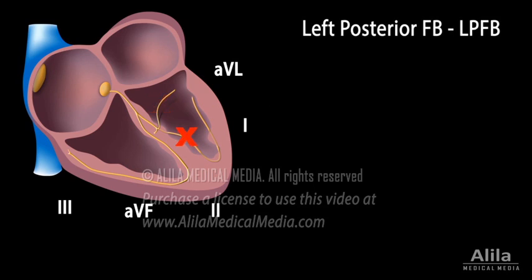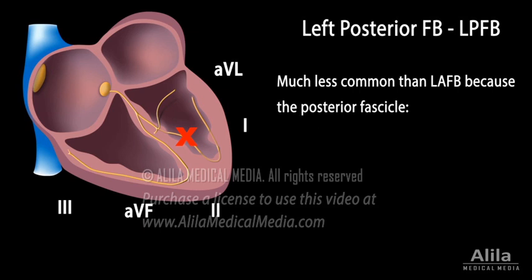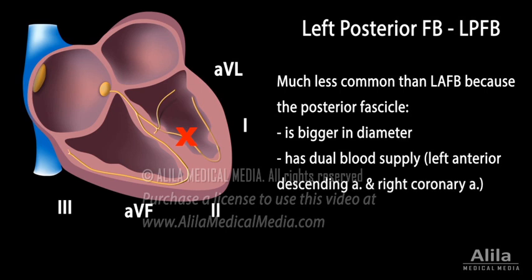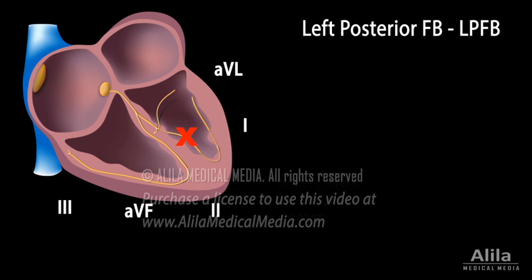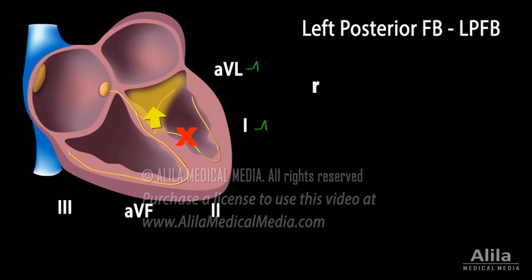Left posterior fascicular block (LPFB) is much less common than LAFB, probably due to the fact that it is bigger in diameter, has better blood supply, and runs through a more protected area. In LPFB, the initial vector follows the intact anterior fascicle, which goes upward and leftward, producing a small positive deflection, small R, in lateral leads, and a small negative deflection, small Q, in inferior leads.